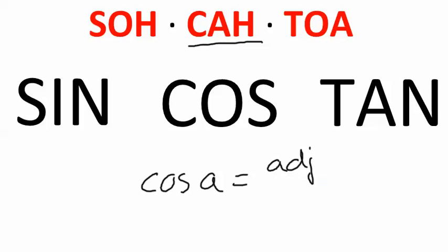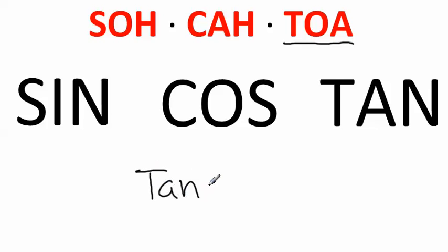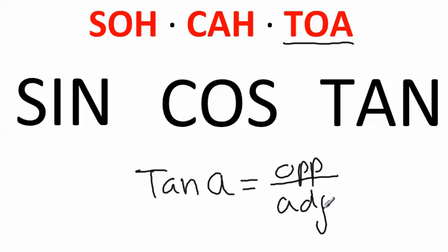And last one is TOA which is tangent. Tangent of an angle is equal to the opposite over the adjacent. So opposite adjacent, O-A, TOA.